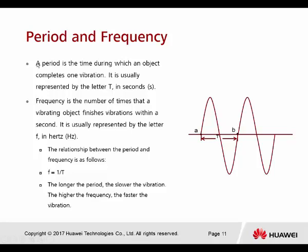Next are period and frequency. The period is the time during which an object completes one vibration — one full 360-degree cycle — represented by the letter T, measured in seconds. Frequency is the number of vibrations completed within one second, represented by F in hertz. The relationship between them is F equals 1 divided by T: the longer the period, the slower the vibration.